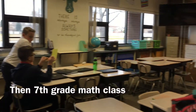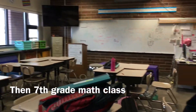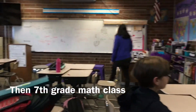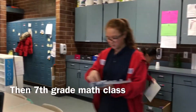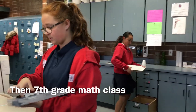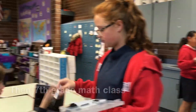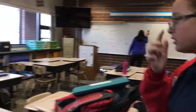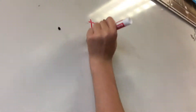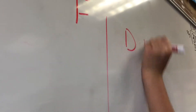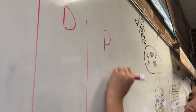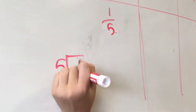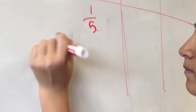In 7th grade math, we've been talking about repeating and terminating decimals, and we've been reworking on dividing and multiplying decimals because we had a hard time the first time. We've also been talking about the metric system and how to convert between units.